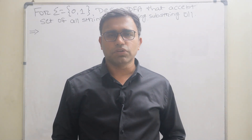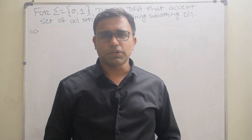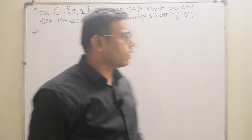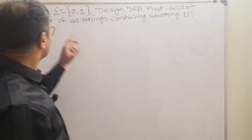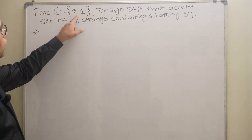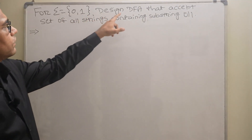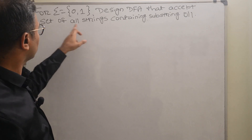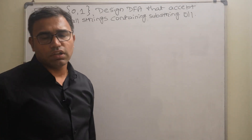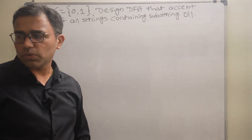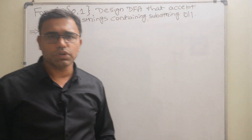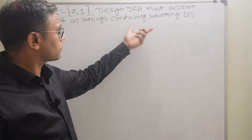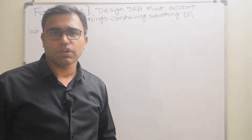The topic of today's video is construction of deterministic finite automata. The question is: for input symbols 0 and 1, design a DFA that accepts the set of all strings containing the substring 011.